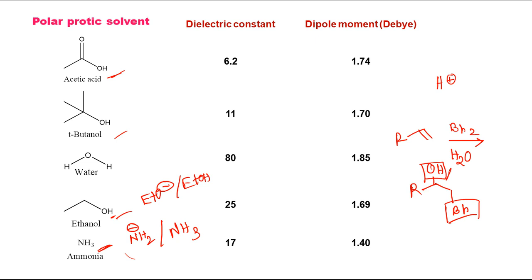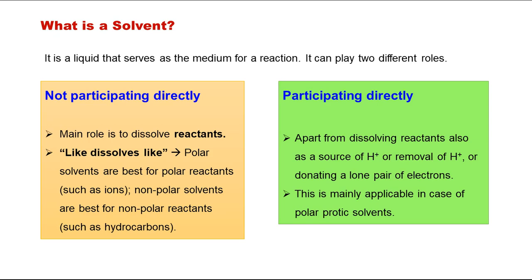So in reactions involving conjugate bases, polar protic solvents are used because apart from playing the role of medium, they can also directly take part in the reaction. This confirms why direct participation is mainly applicable only for polar protic solvents. Now we have a complete understanding of these three types of solvents — polar protic, polar aprotic, and non-polar — including the basic differences and how to recognize them.